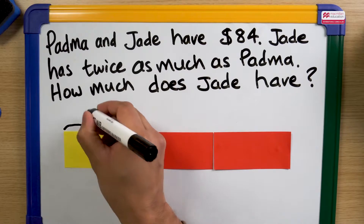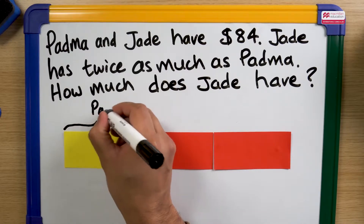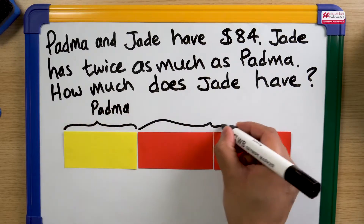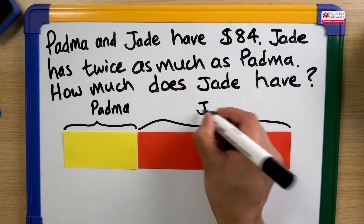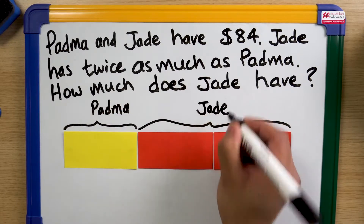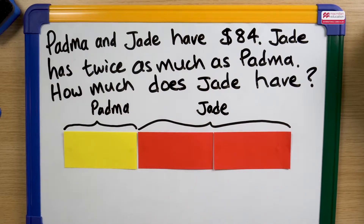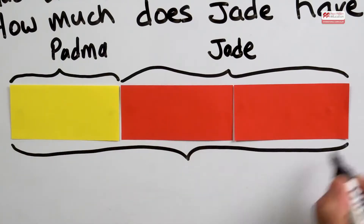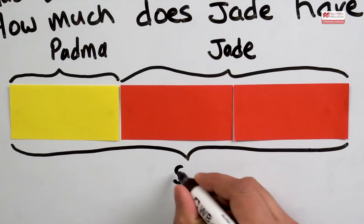Write that down — Padma and this is Jade. So altogether this is $84.